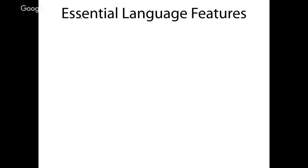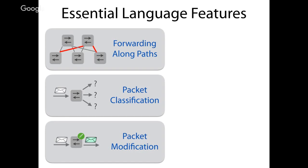NetKAT starts from the question: what are the most essential features needed in a language to program networks? This boils down to three classes. One obvious thing is forwarding packets along paths through the network, and a natural way to express these forwarding paths is using regular expressions — a well-studied existing formal system.